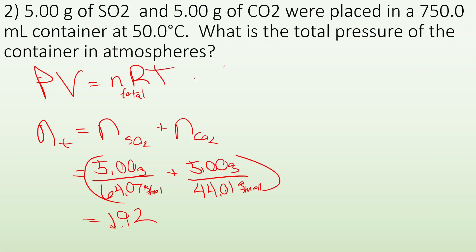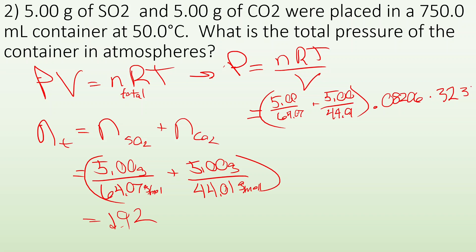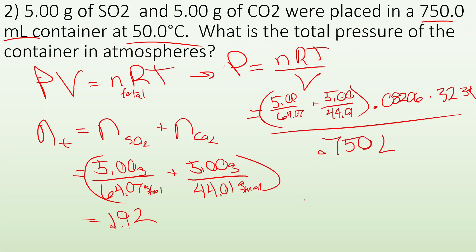If I plug that into PV = nRT and solve for pressure — P = nRT/V — my moles are (5.00/64.07) + (5.00/44.01), R is 0.08206, temperature is 323 K (that's 50°C converted), divided by volume 750 milliliters converted to 0.750 liters. I end up with 6.77 atmospheres.